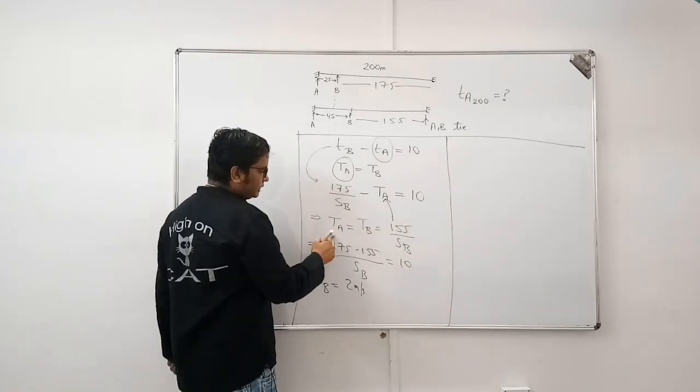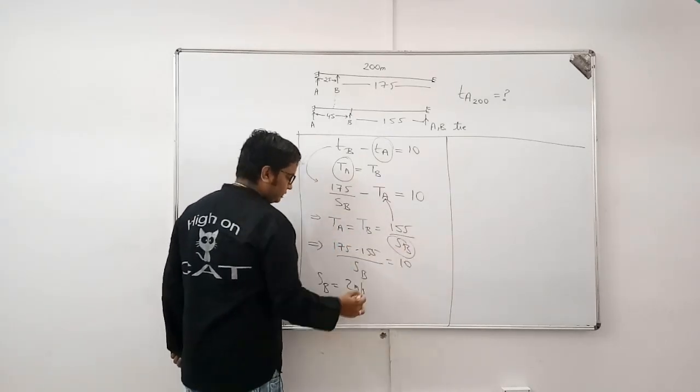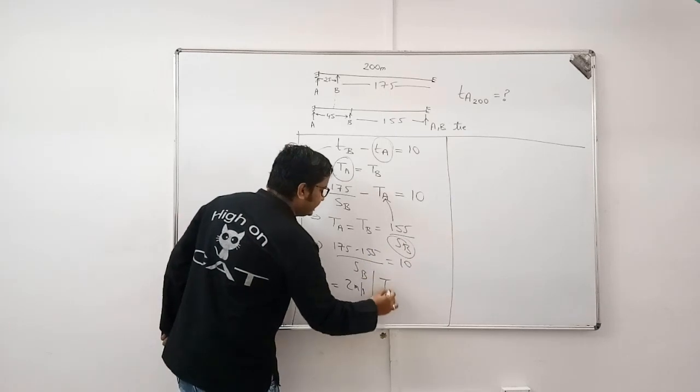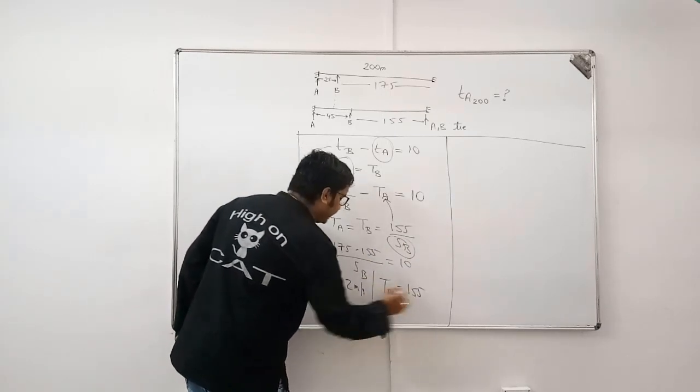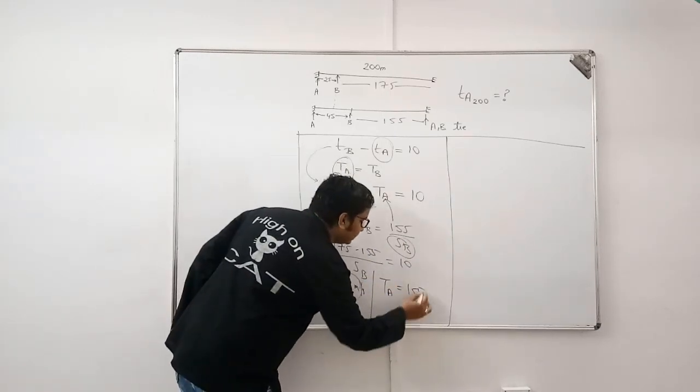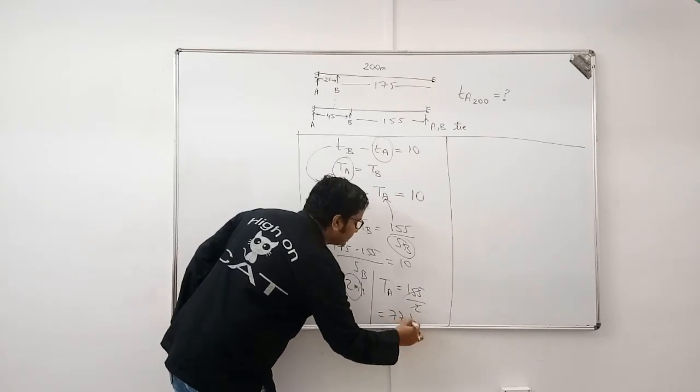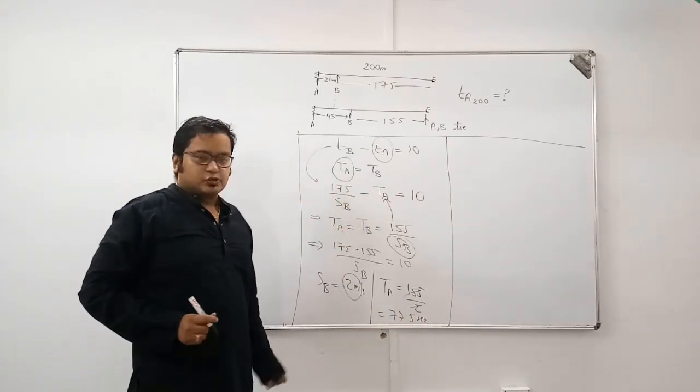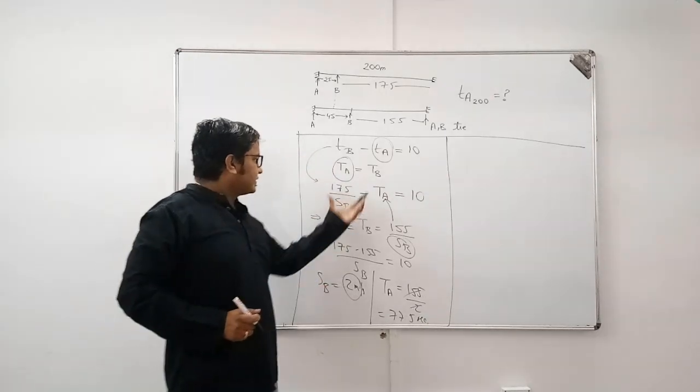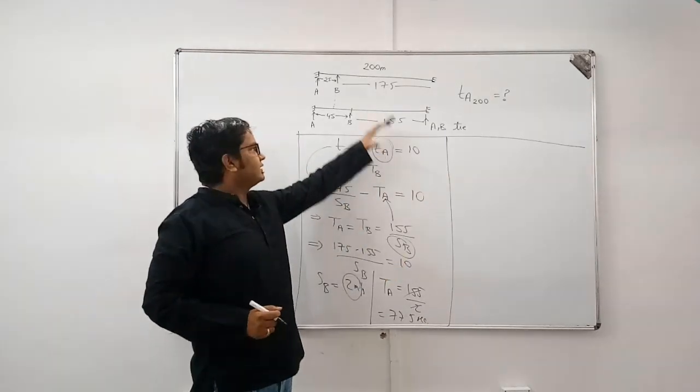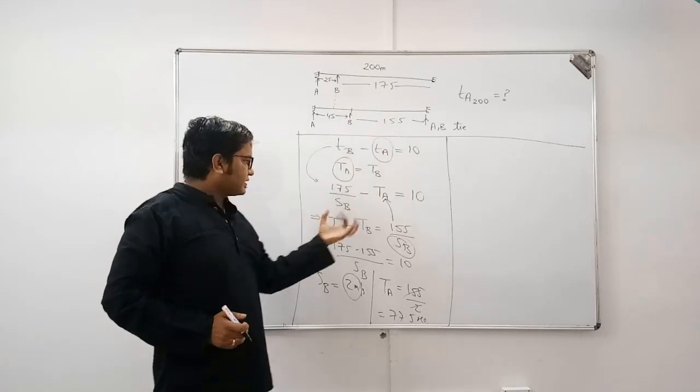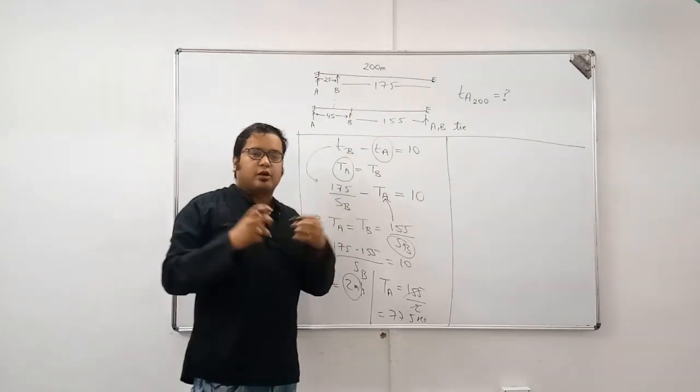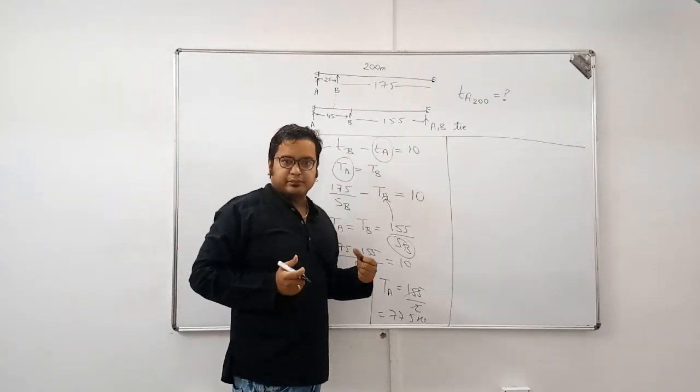Now, to find out TA, put the value of SB here. So, TA is equal to 155 by SB. That is equal to 77.5 seconds. So, we solve this question using equations formed on these two cases. This is the conventional method wherein you form equations and solve a given question.